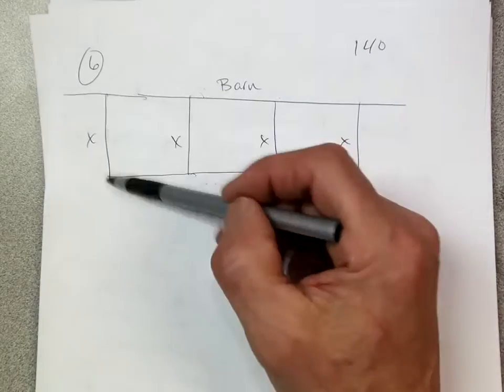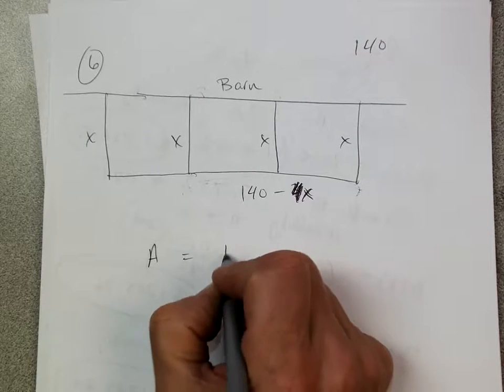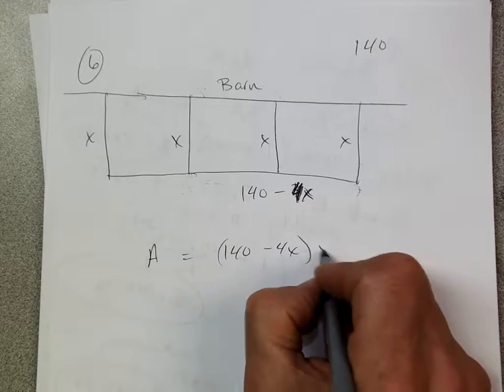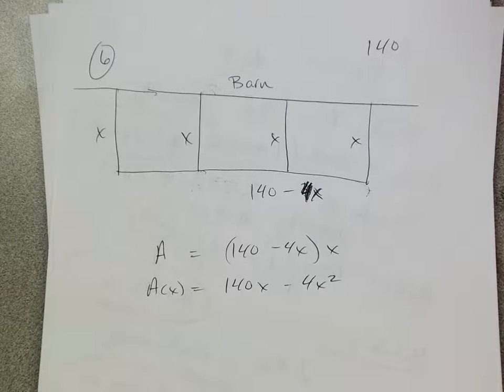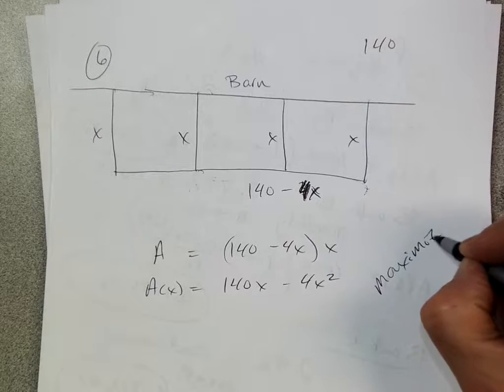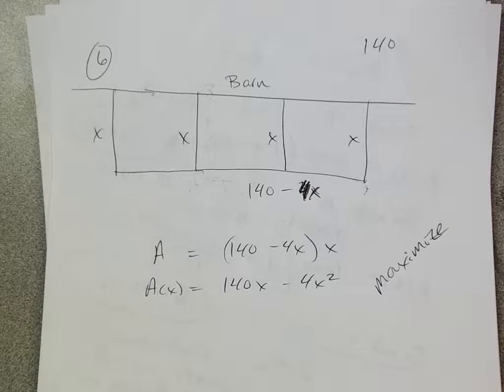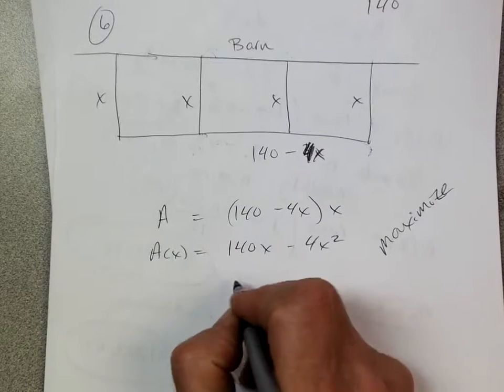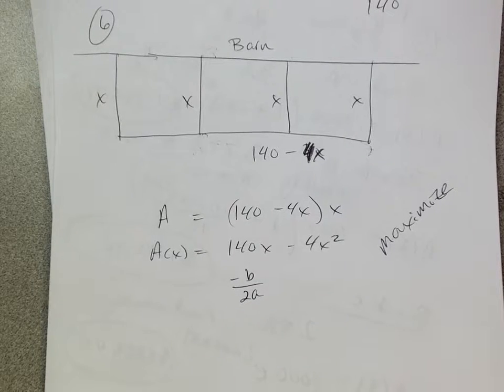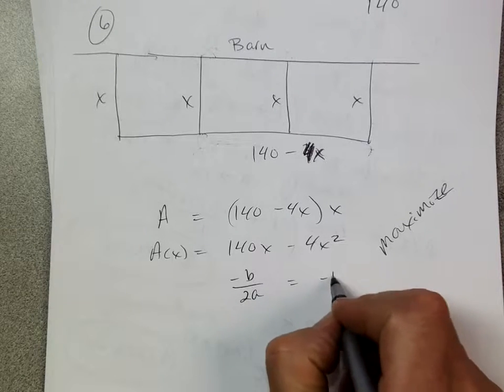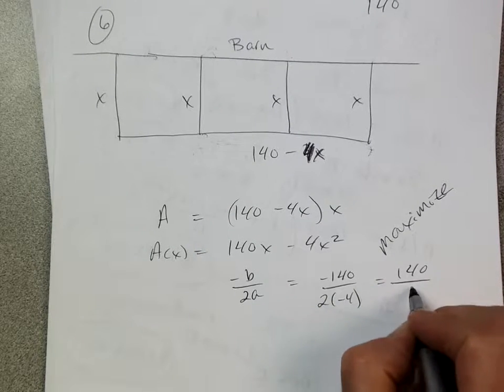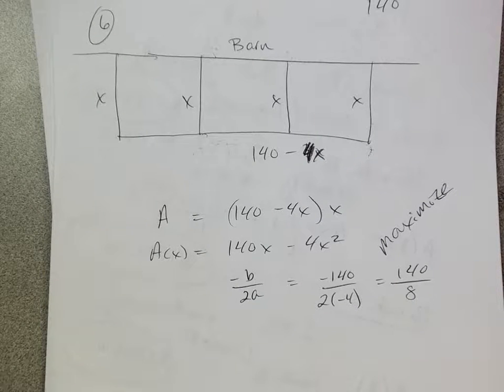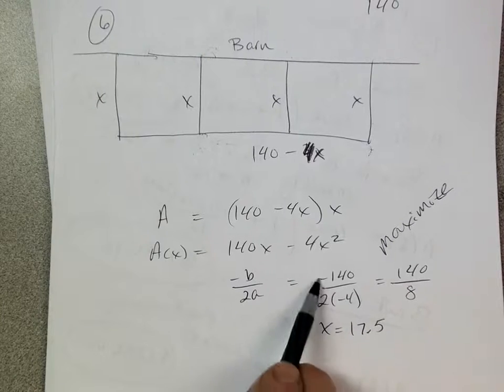So, it's really 140 minus 4x, because I need to put another piece here. Area. What do I know about area? Length times width, so it's 140 minus 4x times x, but a better answer would be 140x minus 4x squared. Now, if we're going to maximize the area, there's two ways. We could graph it, or we could just use the negative b over 2a. For me, negative b over 2a is much faster. And then my negative b is a negative 140 over 2 times my negative 4, which is a positive 140 over 8. 140 divided by 8, 17.5.